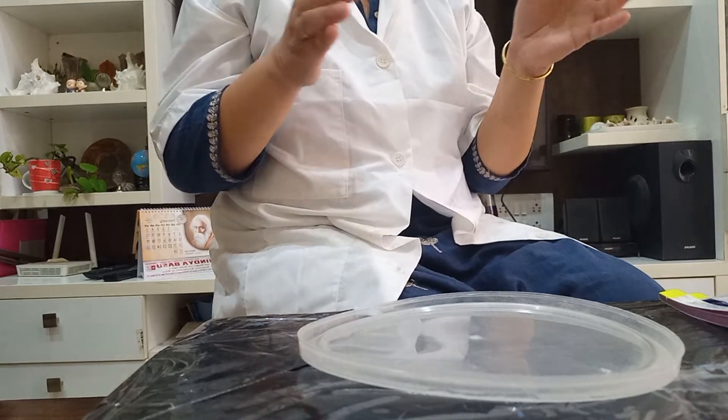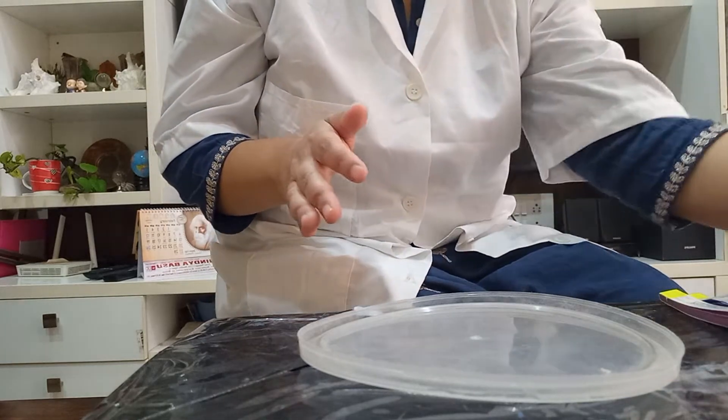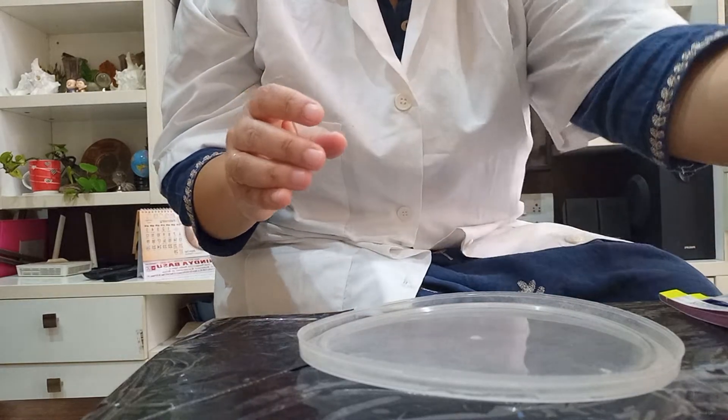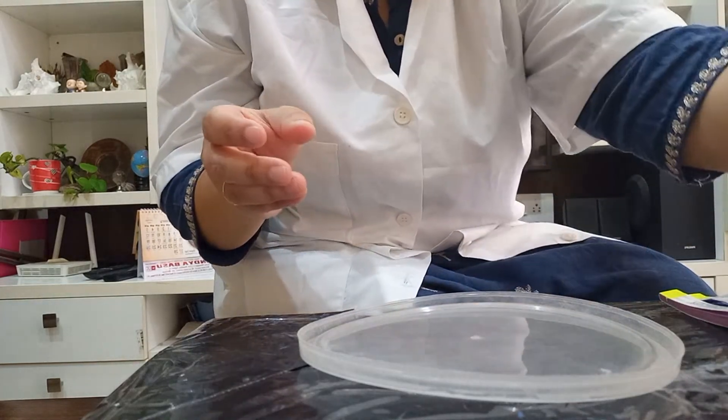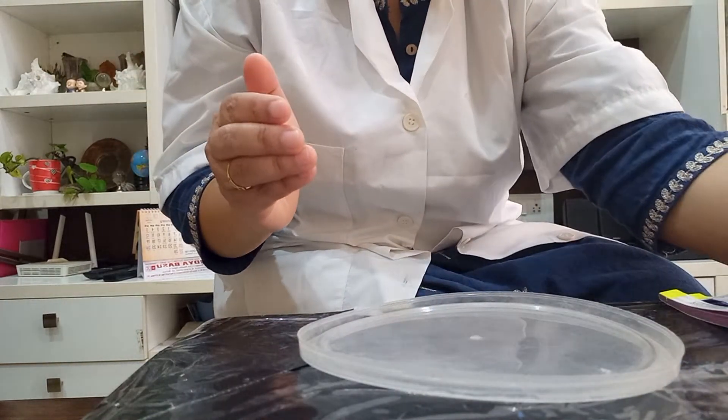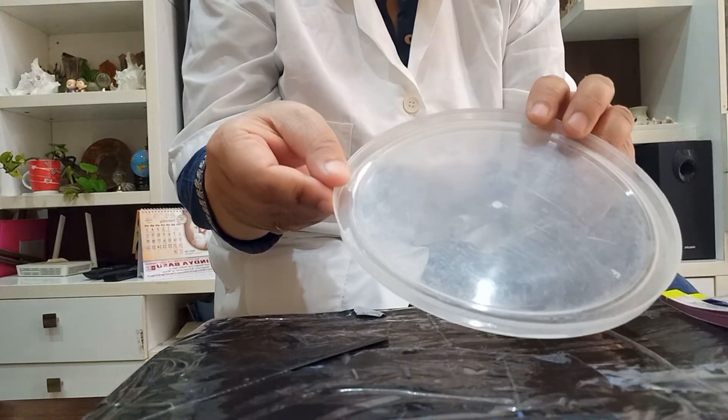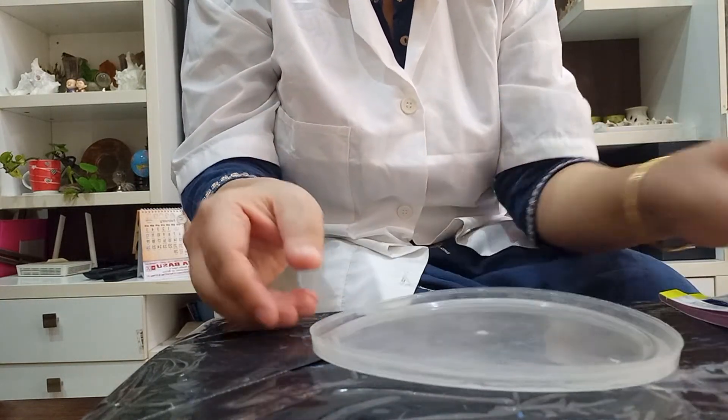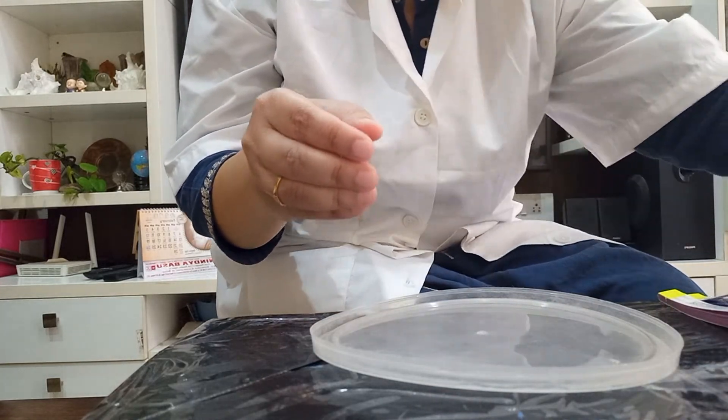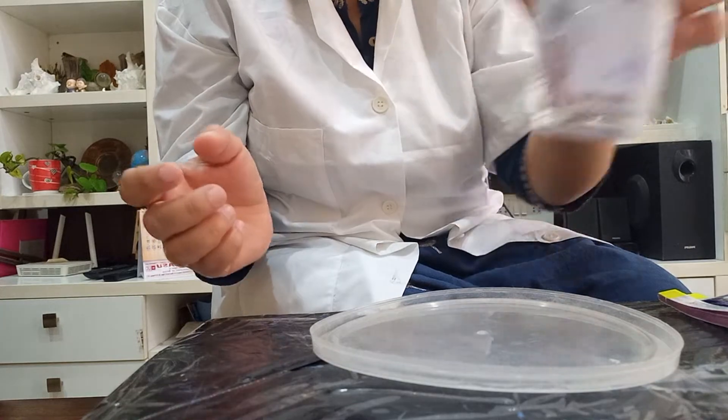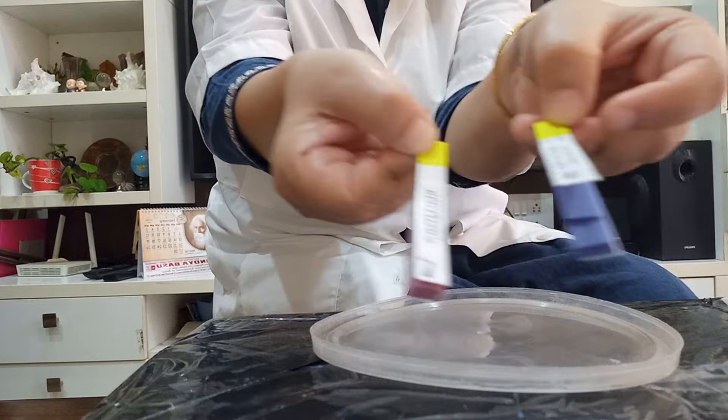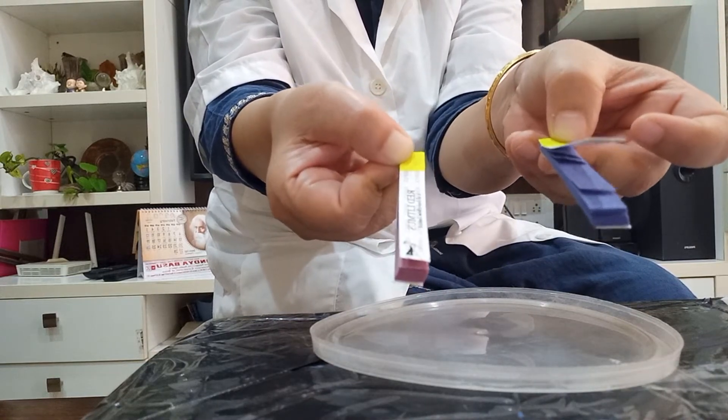For doing this experiment, we need few simple things like this is the citric acid which is available in market. We have some cooking soda. This is washing soda which is available at home and this is a simple plastic plate I am using as a petri dish. Some spoons, water with a dropper, and we need blue litmus and the red litmus paper. These all are available in Amazon.